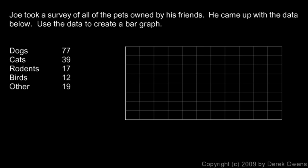So out of all the pets that his friends owned, there were 77 dogs, 39 cats, 17 rodents — that would be something like a hamster or a gerbil or a guinea pig — 12 birds, and 19 other pets.